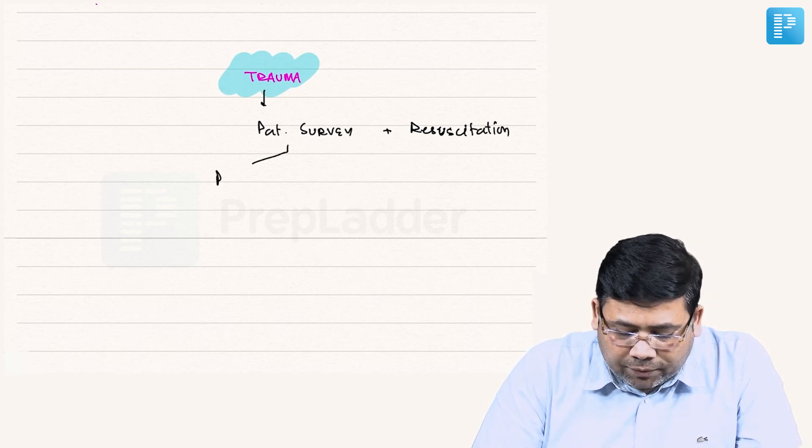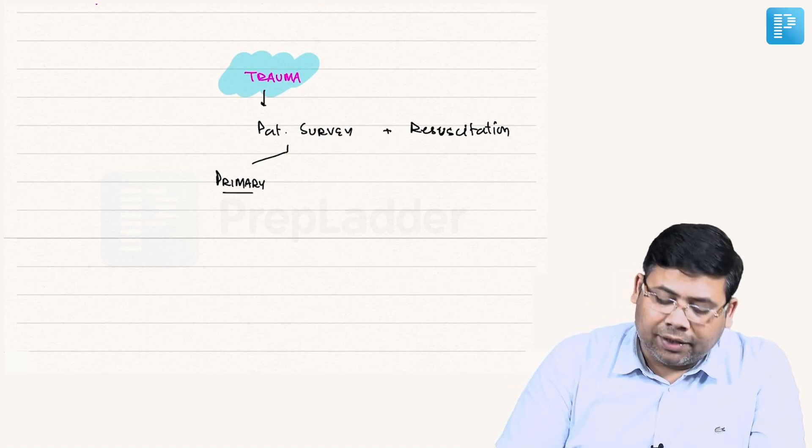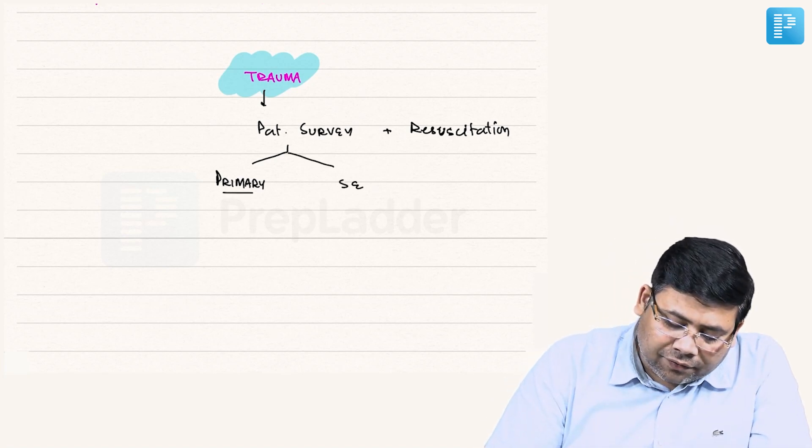Patient survey is of two types: one is the primary survey which is done at the time of arrival in the ER, and the secondary survey which is done after hemodynamic stabilization.